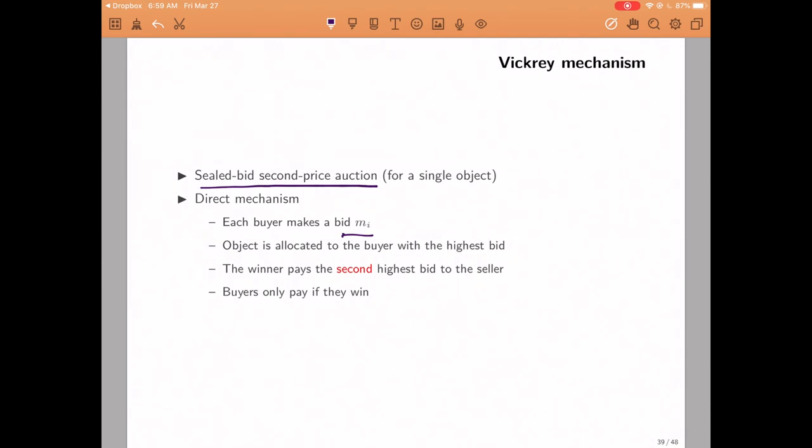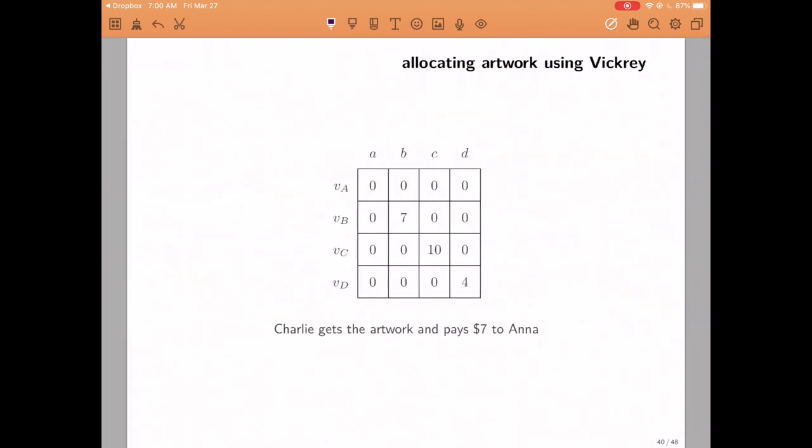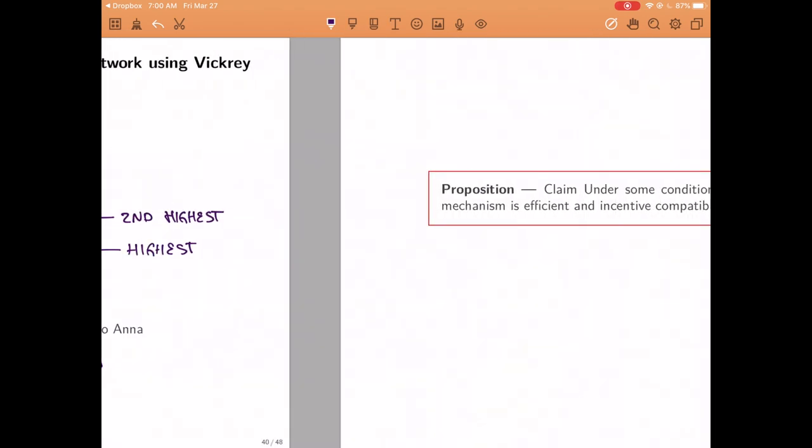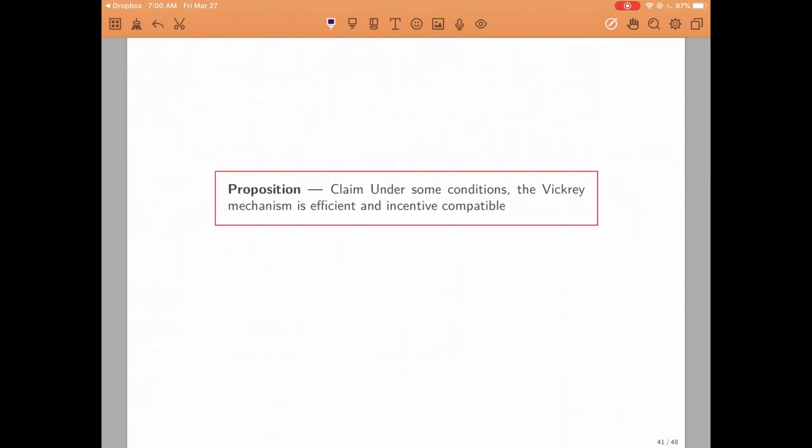They are a direct mechanism, and let me remind you the rules. Each buyer makes a report of a number, a bid, which is supposed to be equal to their value. The object is allocated to the buyer with the highest bid, and the winner pays the second highest bid to the seller. So in this specific example, the highest bid would come from Charlie, if everybody bids truthfully, would be 10. The second highest bid would be Bob's bid, which is a bid of 7. Therefore, Charlie would get the artwork and would pay $7 to Anna.